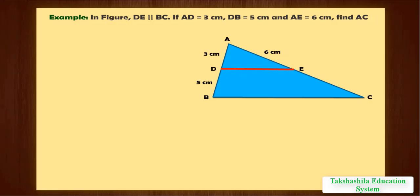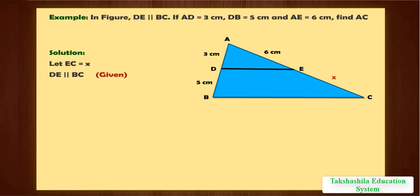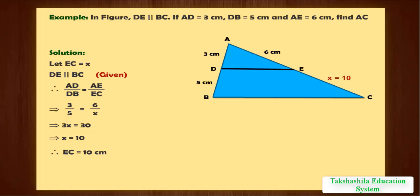Let us take some examples for better understanding. In the figure, DE is parallel to BC. If AD equals 3 cm, DB equals 5 cm, and AE equals 6 cm, find AC. Let EC equal X. Since DE is parallel to BC, by BPT: AD upon DB equals AE upon EC, which gives 3 upon 5 equals 6 upon X. This gives 3X equals 30, so X equals 10. Therefore, EC equals 10 cm, and AC equals AE plus EC equals 6 plus 10 equals 16 cm.